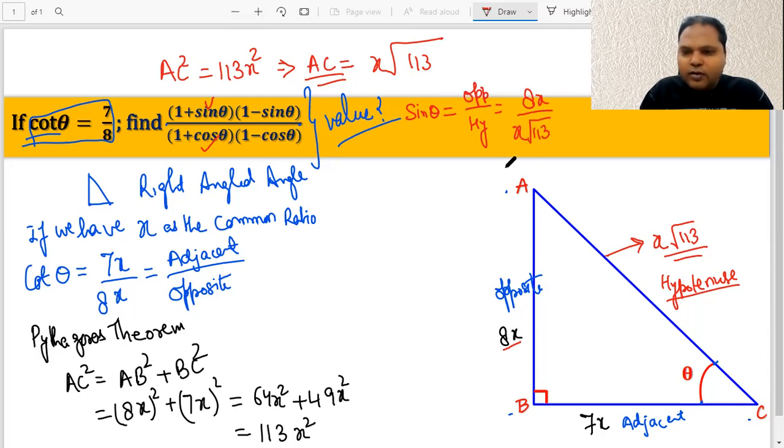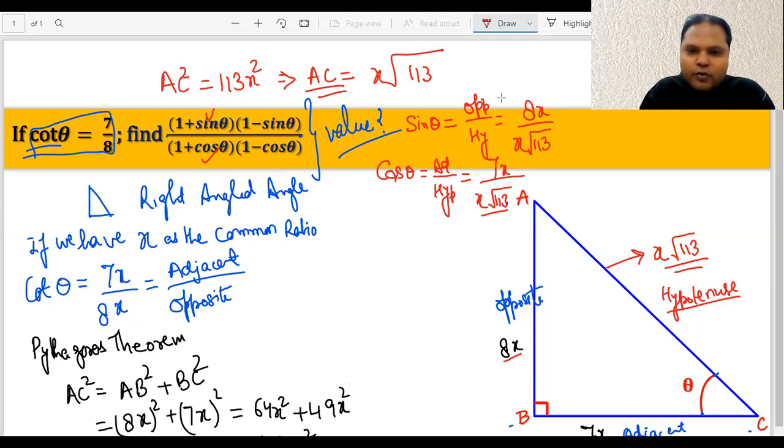Now we have opposite as 8x, so that's like 8x divided by x√113. Similarly, if we do it for cos θ, then it's adjacent upon hypotenuse, and that's equal to 7x upon x√113. Now having these two values, these are the ones which are going to be extremely important for us - these are the two values which we will put into this particular expression which we have here.